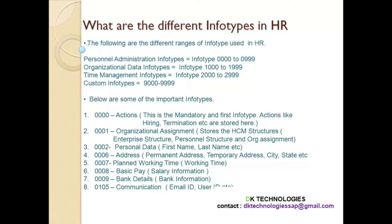The third one is info type 2, which is Personal Data. It stores the first name, last name, birth date, etc. Then info type 6 is Address — it stores address details like permanent address, temporary address, house number, apartment number, city, country, zip code, telephone number, and similar details. Info type 7 is Planned Working Time — it stores the working time of an employee, whether they work 40, 20, or 35 hours per week, whether they are part time or full time.